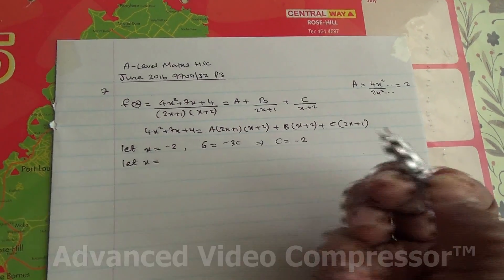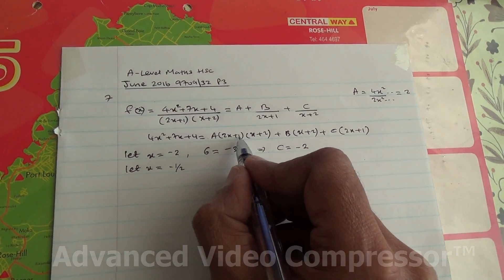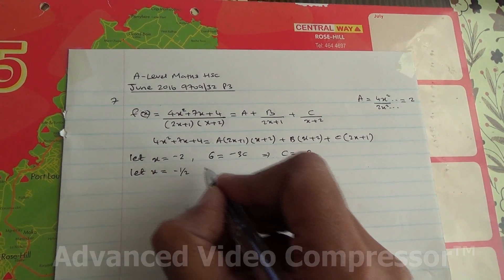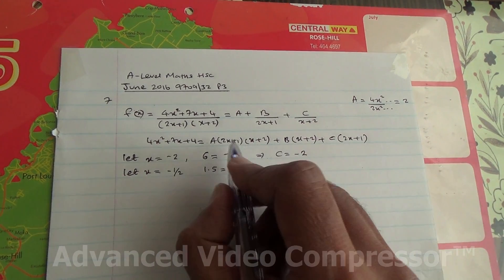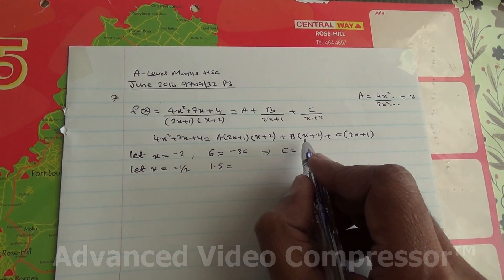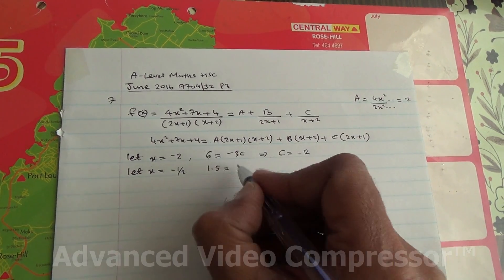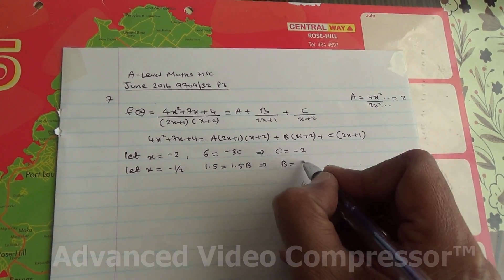Let x equal minus half. Why? Because we have 2x plus 1. Substitute minus half in that expression from your calculator, you're going to end up with 1.5. If you substitute minus half here, it's going to cancel out. And minus half here gives 2 minus half, which is 1 and a half, so 1.5B, meaning that B is going to equal 1.